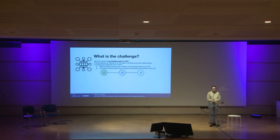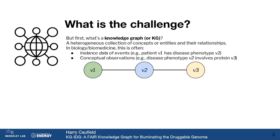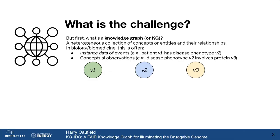I want to back up and talk about the KG in KGIDG, which stands for knowledge graph, because that's what this is. The definition of knowledge graph is unfortunately still a little loose. I like to just define it as a heterogeneous collection of concepts or entities and their relationships — still very general, but there's a reason for that: this is a very flexible kind of data structure, and that's really where its strength is. In biology or biomedicine, that often means combining instance data of events with conceptual or domain-level observations, perhaps from an ontology.